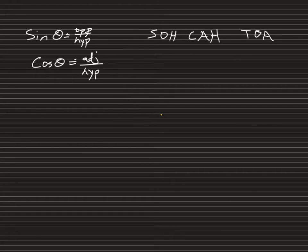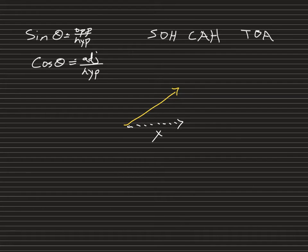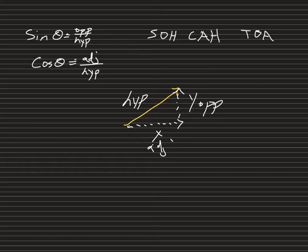Instead of finding a resultant, we're going to start with a vector pointed in a northwest or southeast direction and break it down into its x and y components. So we start with our vector and find its x component along the x-axis and its y component. We're doing the reverse: you're given the hypotenuse and finding the opposite and the adjacent. Keep in mind your x won't always be the adjacent and y won't always be the opposite, so be careful with that.